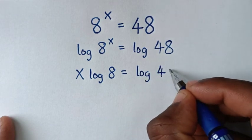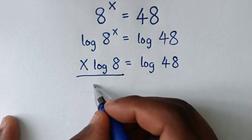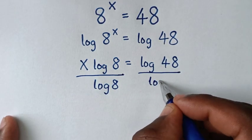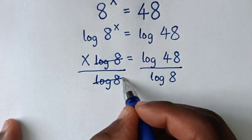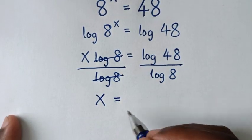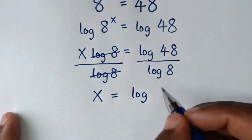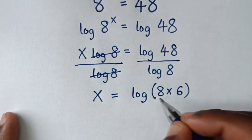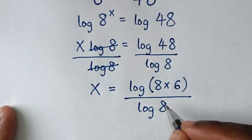Then we'll divide by log of 8 on both sides. The log of 8 cancels, so it will be x is equal to log of 48 over log of 8. Now 48 is 8 times 6, so x equals log of 8 times 6, divided by log of 8.